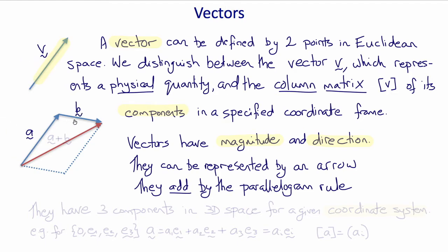So if this is vector a and this is vector b, their sum a plus b is this vector.